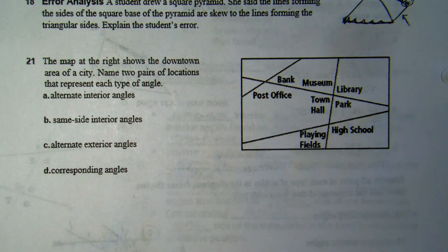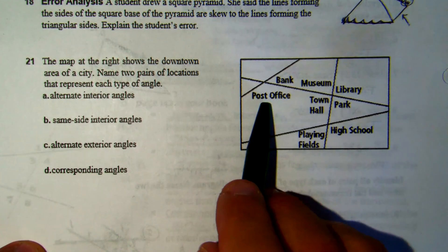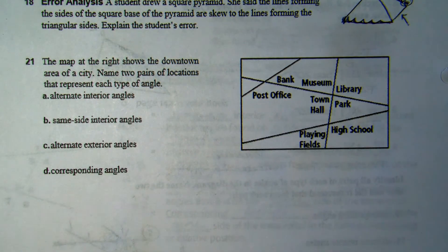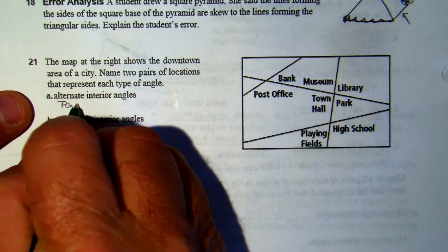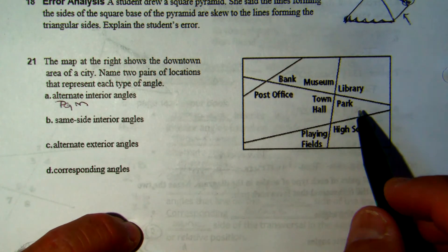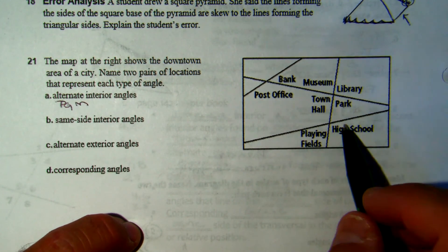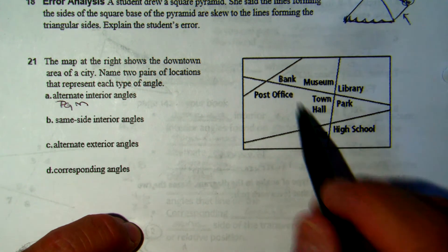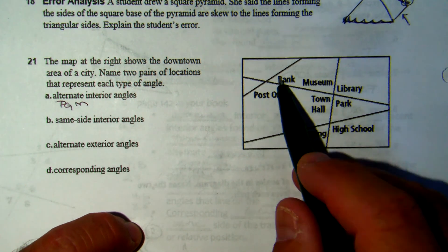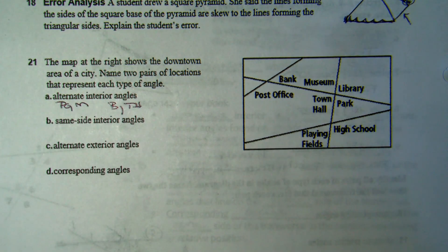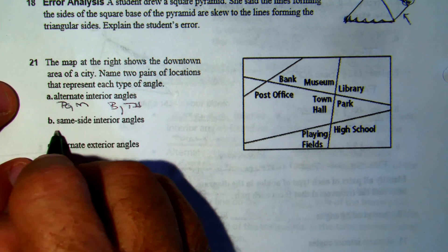A map shows the downtown area of a city. Name two pairs of locations representing each type of angle. Alternate interiors: the post office is interior on one side, and on the opposite side is the museum — so post office and museum is one pair. The bank and town hall is another example.